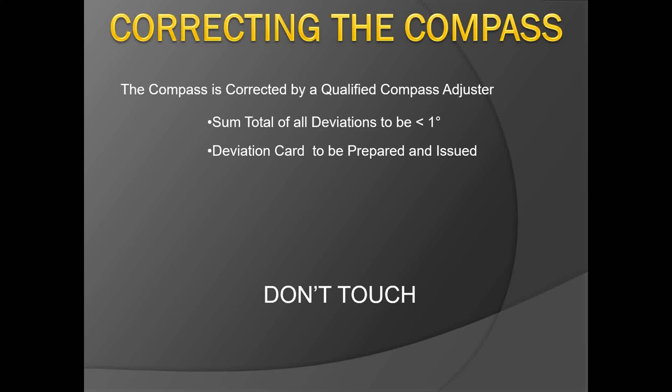Correcting the compass is the job of a qualified compass adjuster, not the master, though it is advisable for a ship's officer to pursue this course as it is a valuable and rare skill. Compass adjuster courses are available in different countries. After adjustment by a licensed compass adjuster, the sum total of all deviations on different headings should be less than one degree. A deviation card must then be prepared and issued.